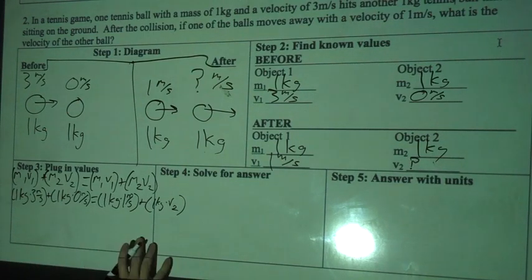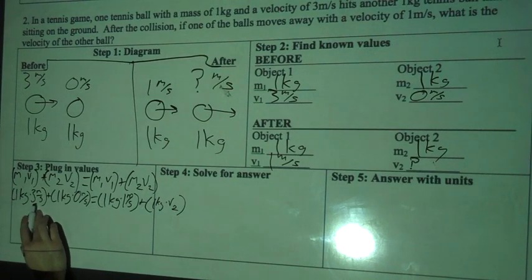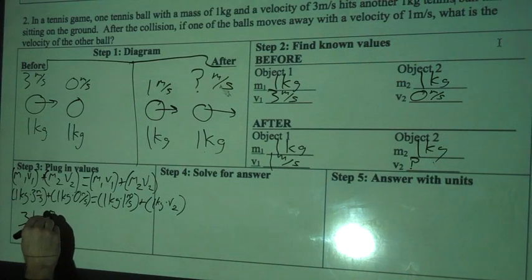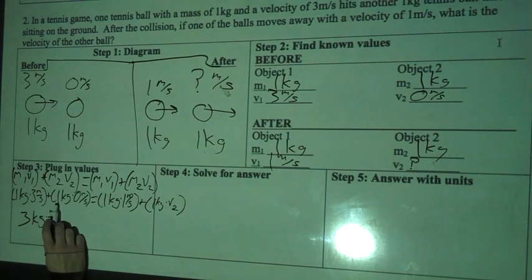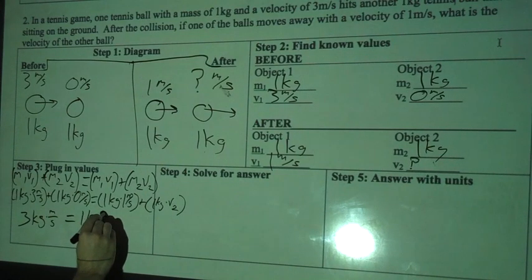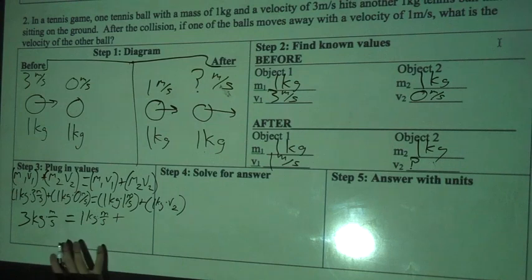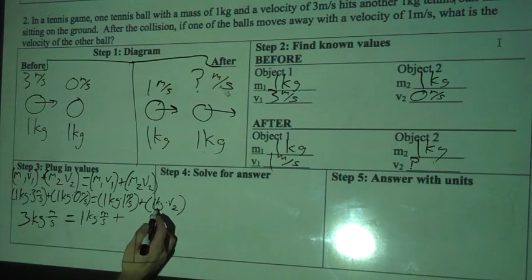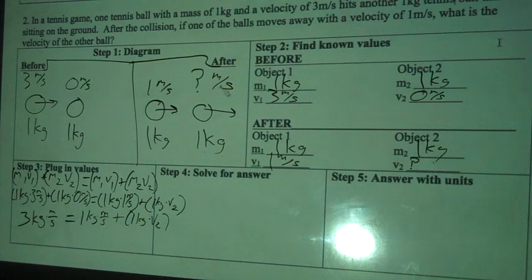This is going to simplify very easily. One kilogram times three meters per second gives me three kilogram meters per second. Plus one kilogram times zero — I know that's zero, so I just write my equal sign. Then I have one kilogram times one meter per second, which gives me one kilogram meter per second. It's really important that you keep the plus sign in here. There are two moving objects after the collision, so there's one kilogram times one kilogram meter per second, plus one kilogram times V2.